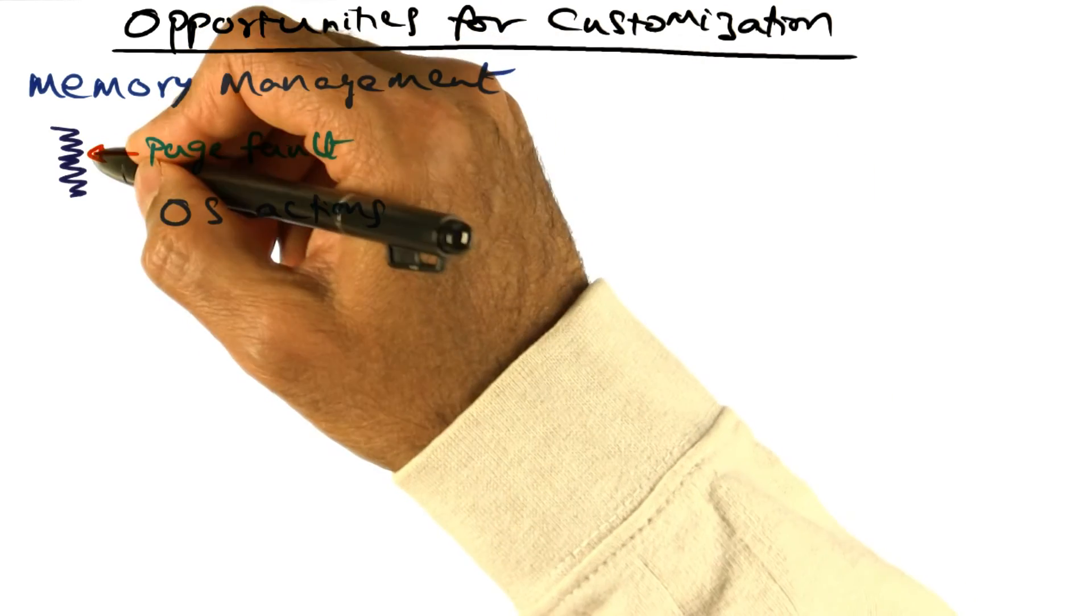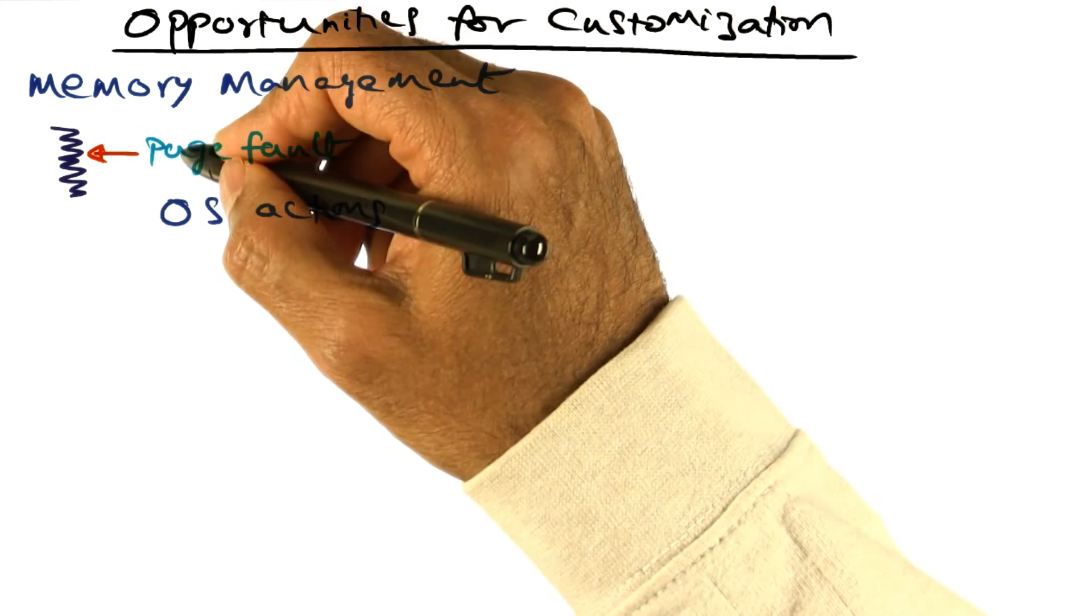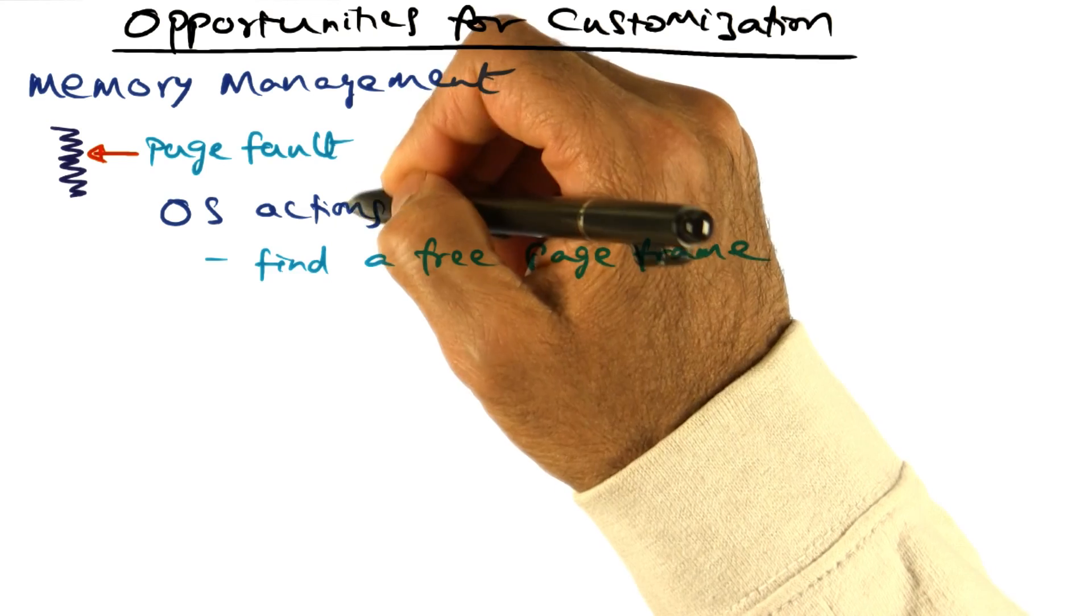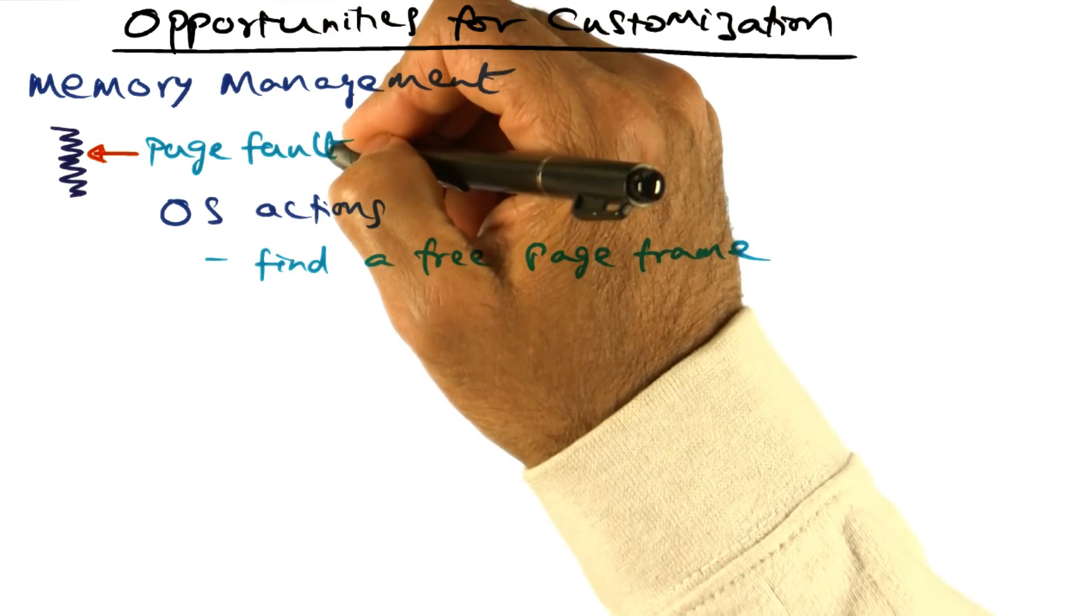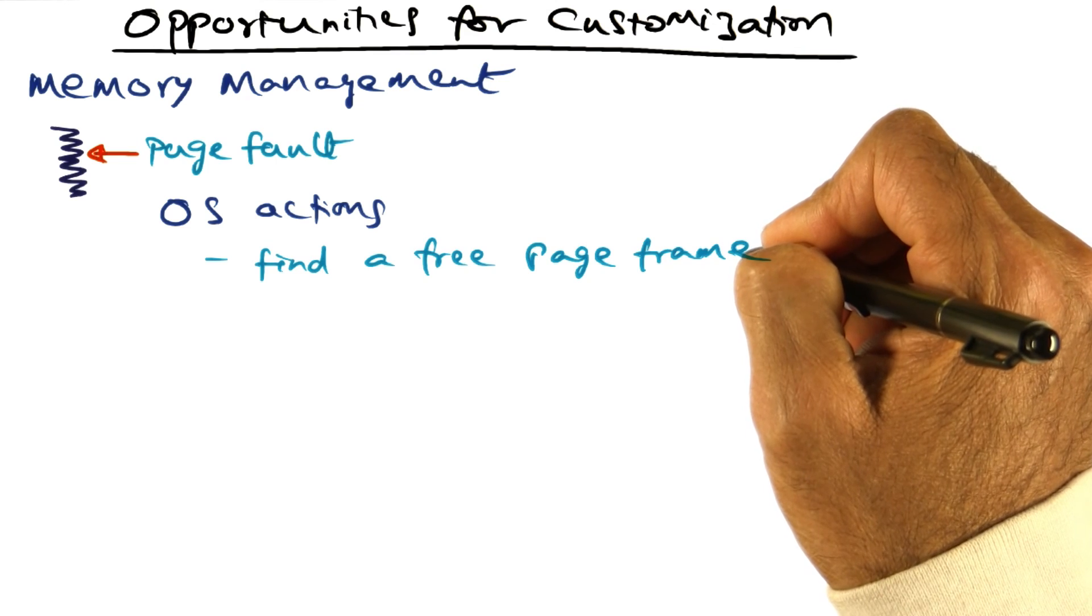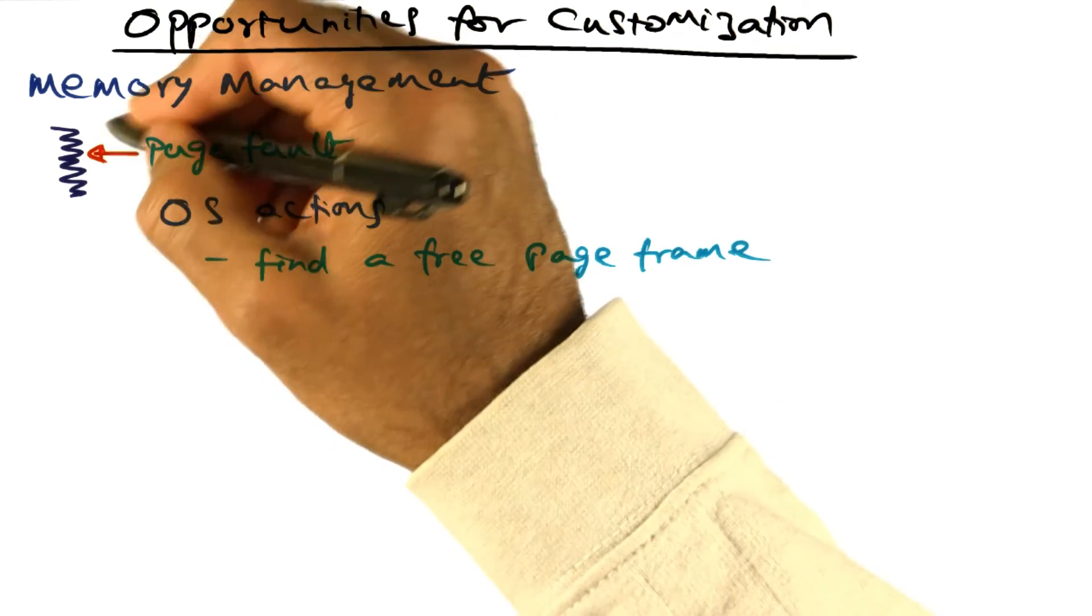Let's say that this thread executing on the processor incurs a page fault. The first thing that the operating system has to do in order to service this page fault would be to find a free page frame to host the missing page for this particular thread.